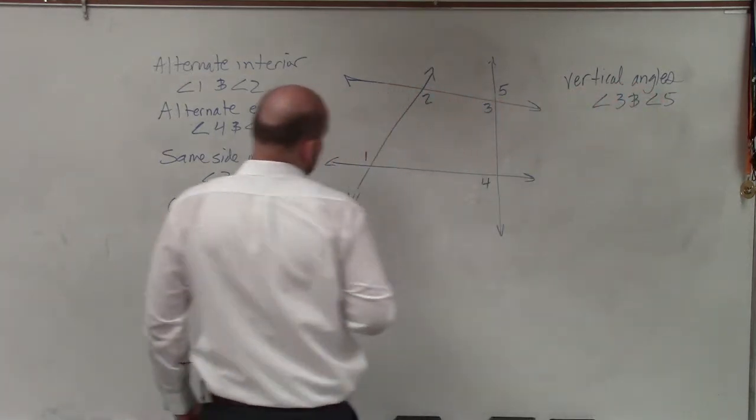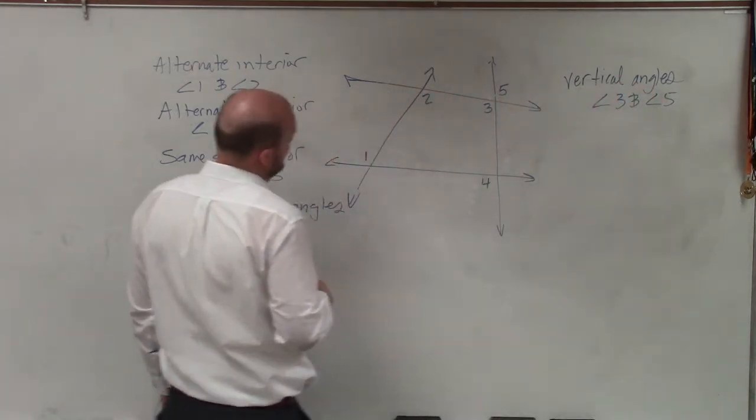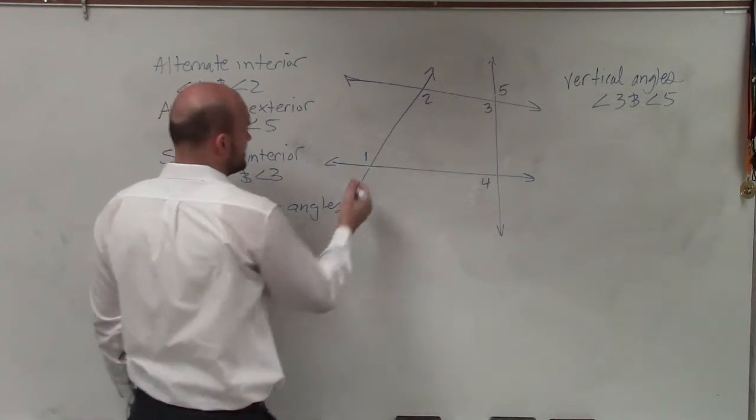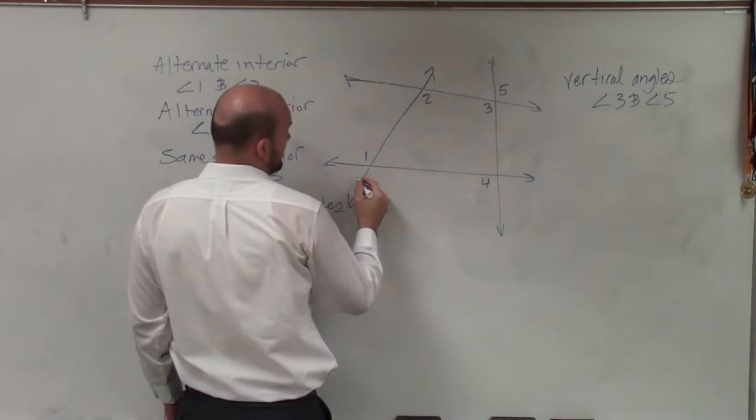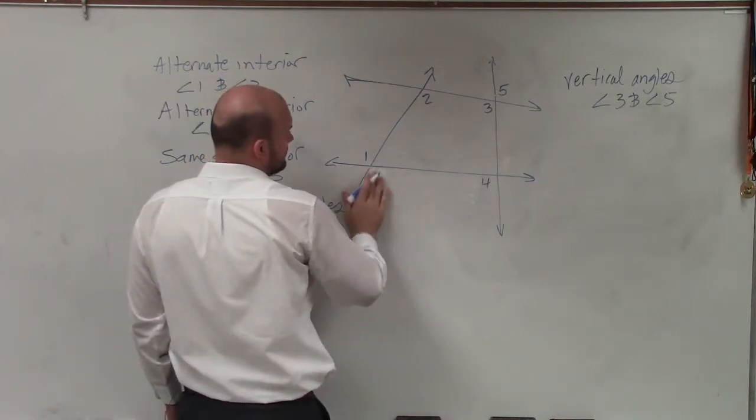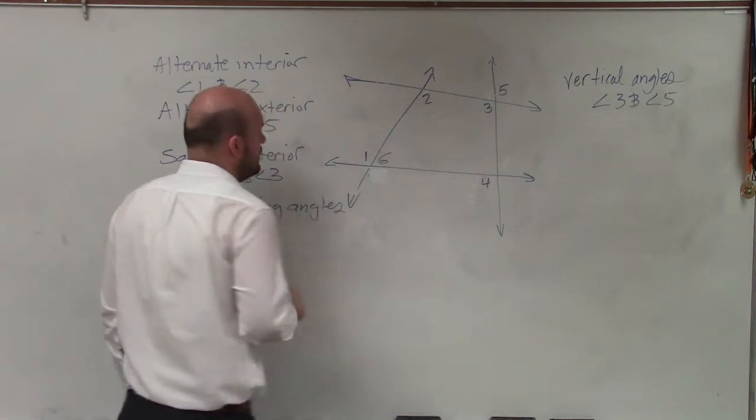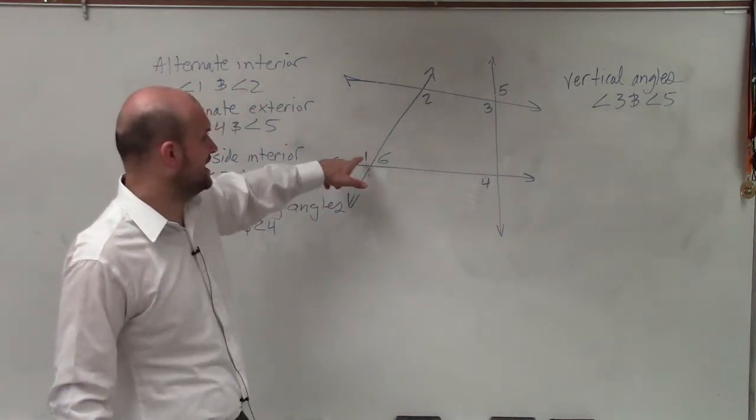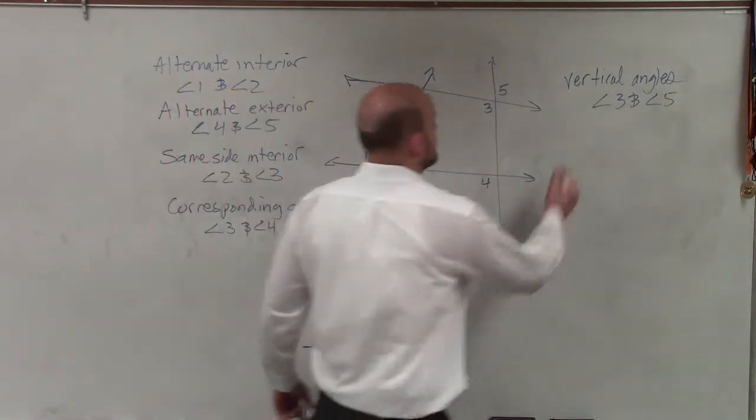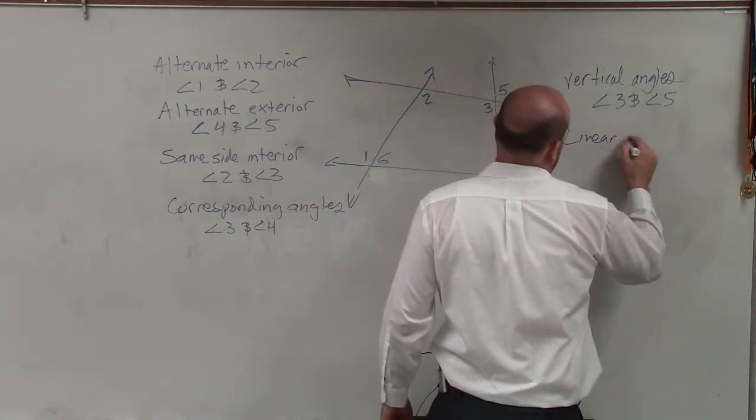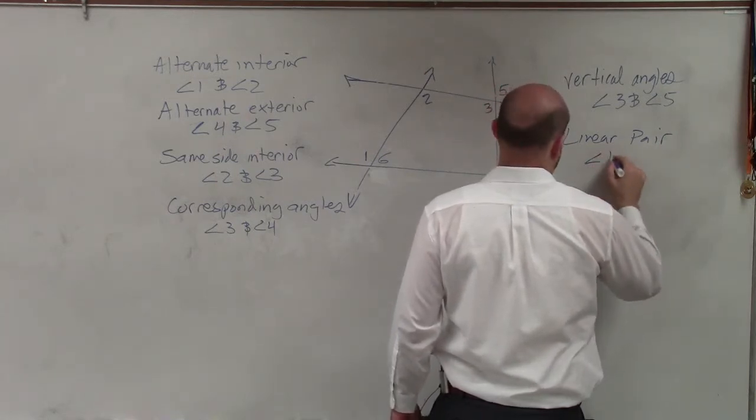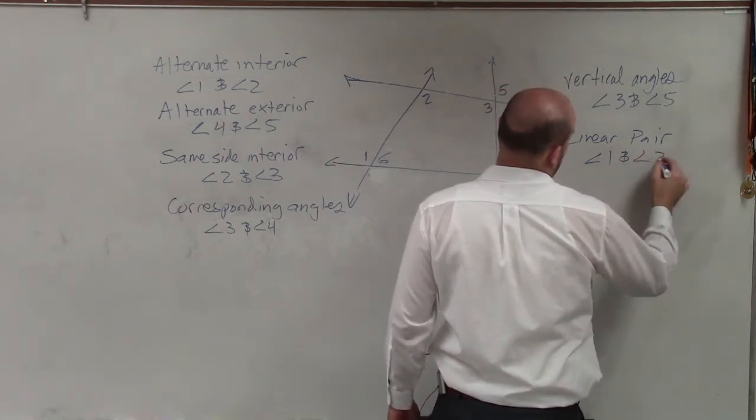And one last one that I decided not to drop here, which maybe I can see here would be a good example. Let's do number six. One other thing is you can see that angle one and angle six, those form a line. So another important thing is a linear pair. And any time you have two angles that create a line, we're going to call them a linear pair.